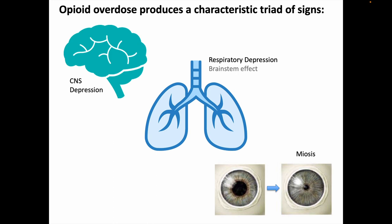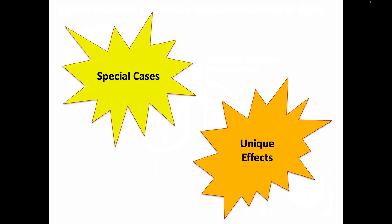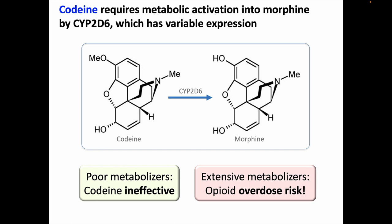Okay, that's the typical stuff, but what about special cases and unique effects? This is going to be a real potpourri of miscellaneous facts. We've seen that codeine is structurally very similar to morphine. Codeine itself is a very poor analgesic; it requires metabolic activation into morphine, which occurs by cytochrome P450 2D6, and this enzyme has notably variable expression. If a patient is deficient in 2D6 — occurring for example in 5-7% of Caucasians — codeine will be ineffective. Other patients can be extensive 2D6 metabolizers, such that what should be a normal codeine dose is converted into a toxic dose of morphine.